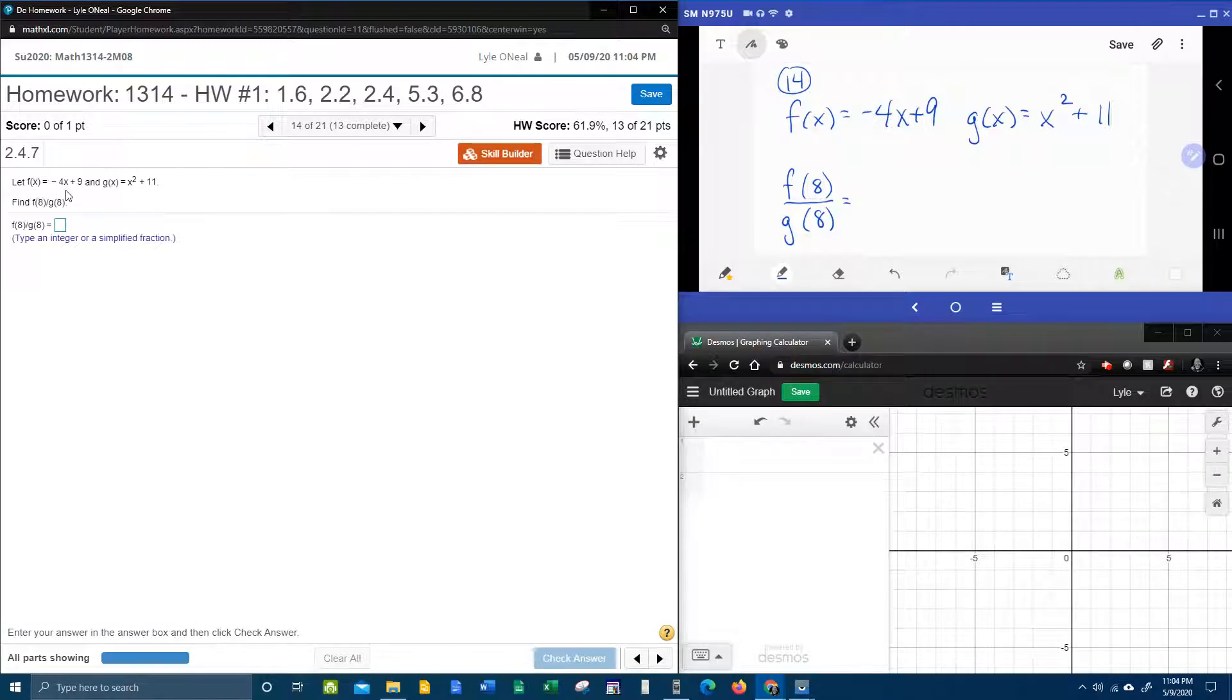It says, let f of x equal negative 4x plus 9 and g of x equal x squared plus 11. They want us to find f of 8 divided by g of 8.